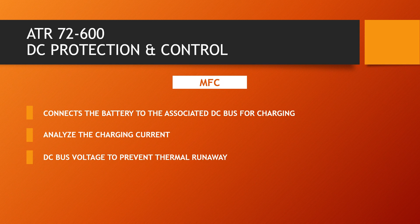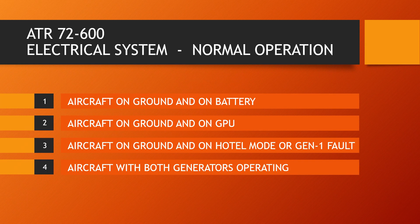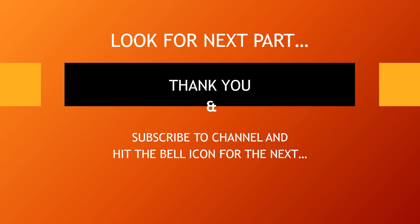Thermal runaway leads to total battery discharge and the battery will not be recharged again. That's all for this class. In my next class, we will cover normal operation of the DC power system when: 1. Aircraft on ground and on battery; 2. Aircraft on ground and on GPU; 3. Aircraft on ground and on hotel mode with DC Generator 1 fault; 4. Aircraft with both generators operating. Thank you Captain — this part was the description of the DC power system.